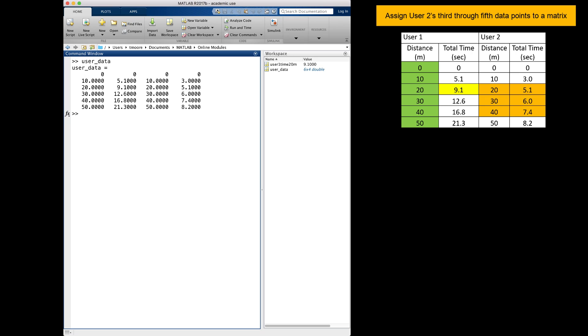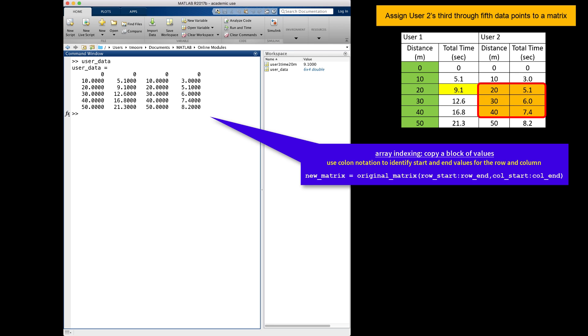The next thing I need to do is assign the block of data from user 2 to a variable. Blocks of elements can be copied by referring to the beginning and end row and column numbers. I will create my variable with the name user2_dist_time, and then add the equal sign. Then I must use the matrix name and open the parentheses. The values we want to copy have the first row 3 and the last 5, and the first column 3 and the last column 4.